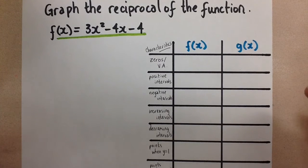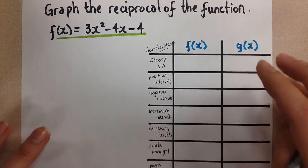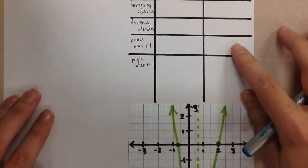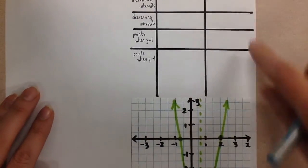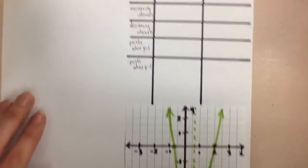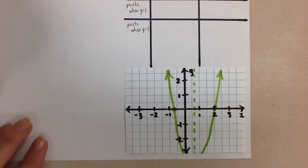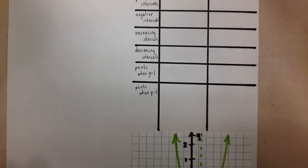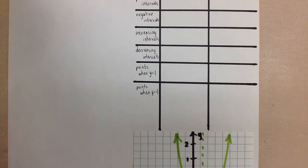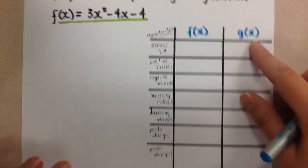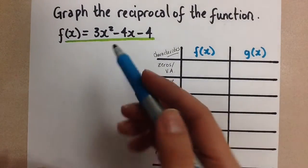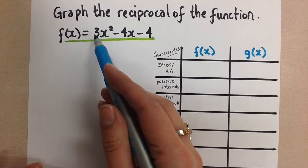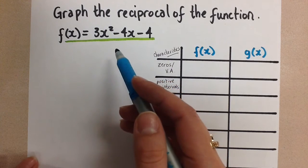I already started off the question by graphing this parabola in green. You can see the graph of our parabolic function there — it goes off the graph a little bit, but it's graphed as a guideline to help us with doing the sketch for the hyperbola we're going to get from the reciprocal function. I graphed it knowing this is a positive a value, so it's an open-up parabola, and I factored it to get the zeros of the function.